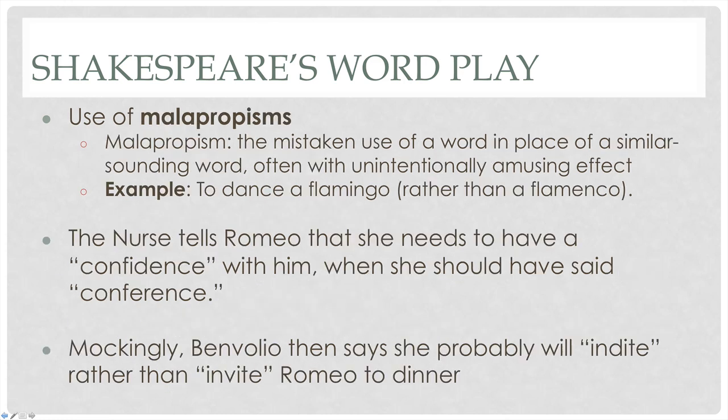Another word play Shakespeare is known for is a malapropism — the mistaken use of a word in place of a similar-sounding word, often with unintentionally amusing effect. The common example given is 'dance a flamingo' — a type of bird — when one probably meant 'flamenco,' a Latin American type of dance. An example from Romeo and Juliet: the nurse tells Romeo she needs to have a 'confidence' with him, when she should have said 'conference' — two people talking. Then Benvolio responds making fun, saying she'll probably 'indict' rather than 'invite' — 'indict' meaning charge with a crime, 'invite' meaning allow someone to come to dinner.